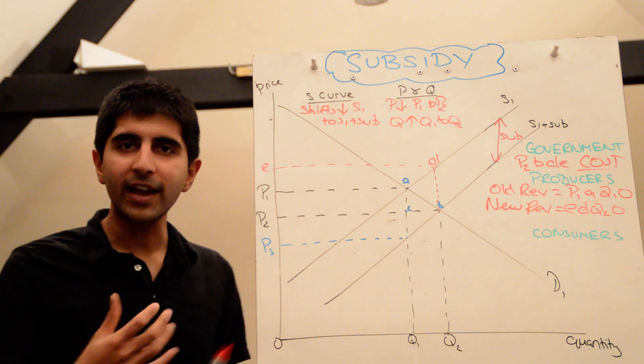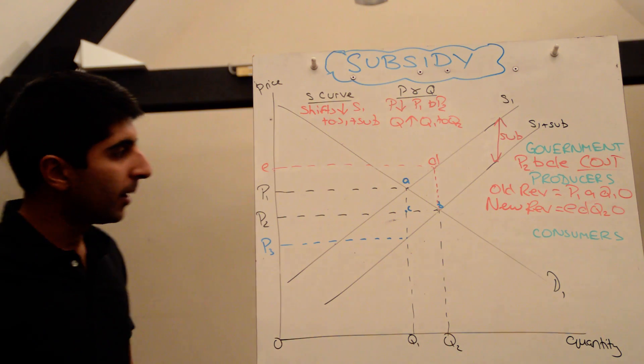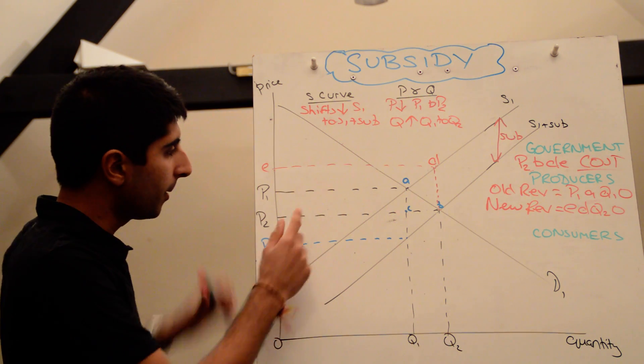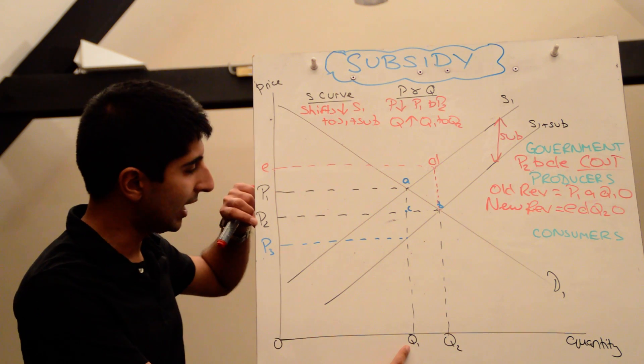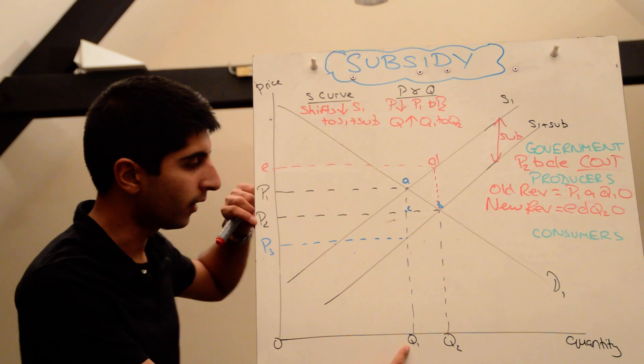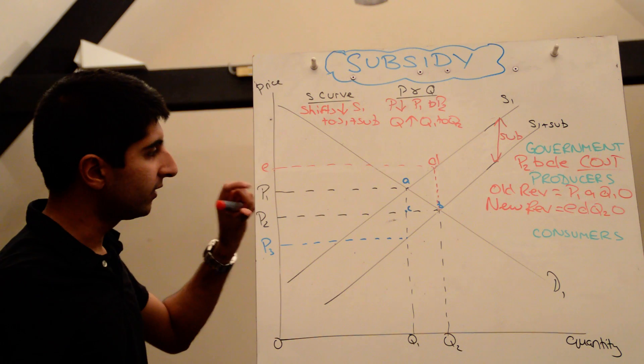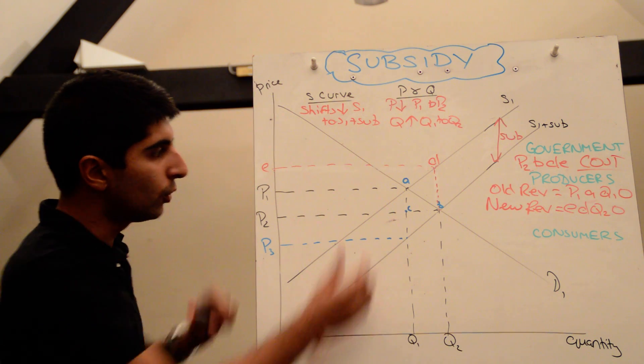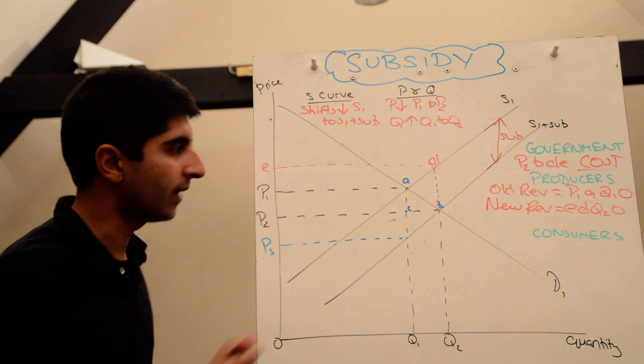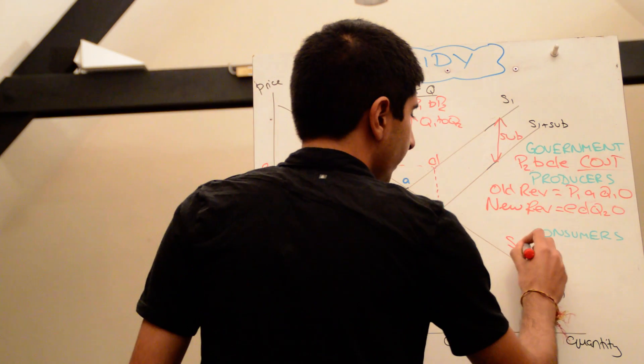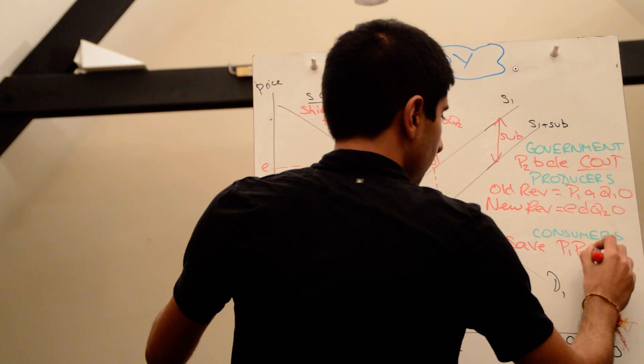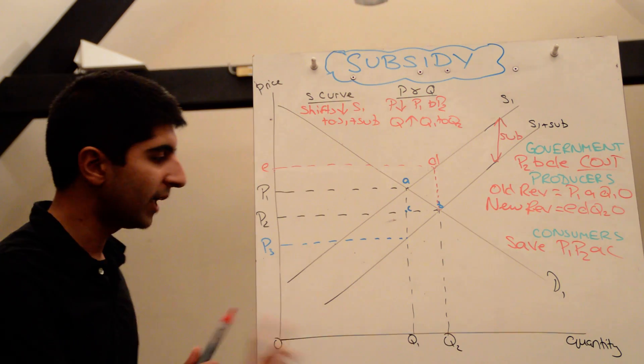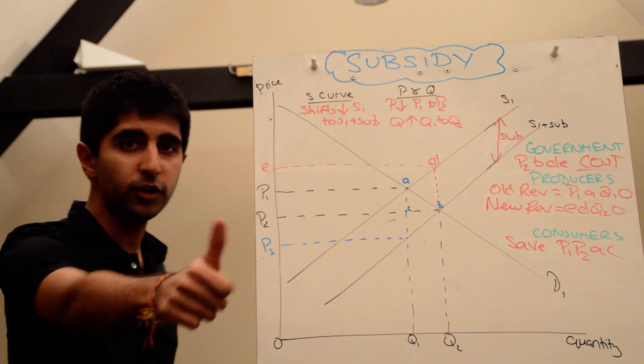What about consumers? Are they lucky? Well, they're lucky in one sense. Because have a look. Before the subsidy, they were paying price P1 for Q1 units. They can now buy Q1 units at a lower price, call it P2 here. So they're actually saving. They're saving P1, P2, AC. That's how much they're saving. So that's a good thing for consumers as well. They are saving. They're now paying for Q1 units at a lower price. Fantastic news for consumers.